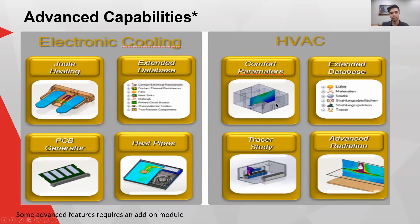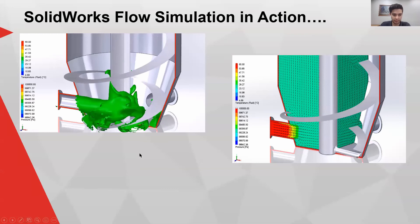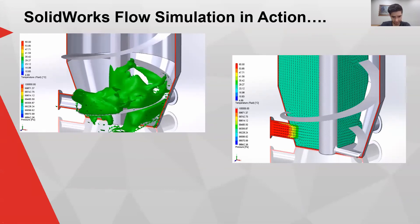You can also do tracer studies to see how particles spread throughout the room. And you get access to advanced radiation simulation, including semi-transparent substances and sun tracking. For visual examples: electronic cooling simulations, a valve example, some HVAC examples in the top right corner, and a mixed flow environment showing the mixing of gas and liquid.